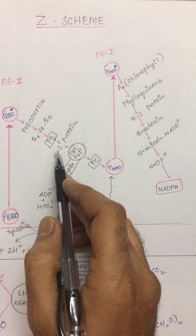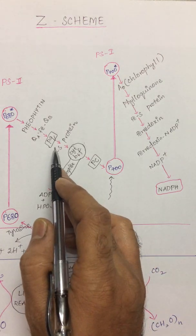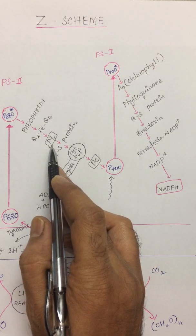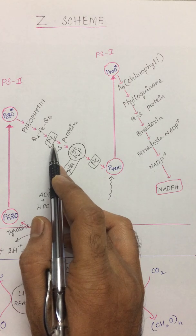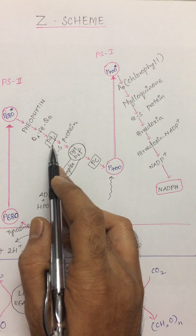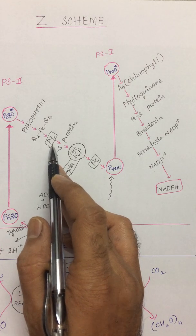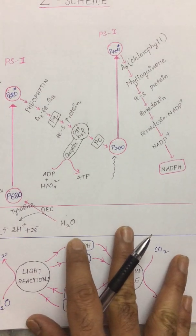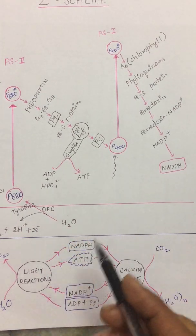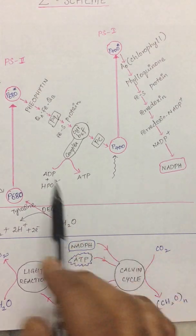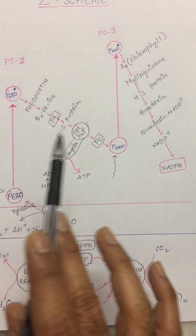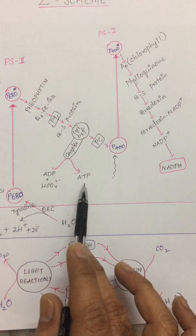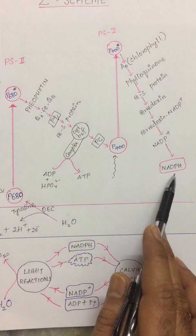Plastoquinone is an electron transfer member with no metal at its active site. The important points about the Z scheme are that Photosystem II and Photosystem I together produce oxygen, ATP, and NADPH.